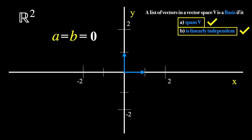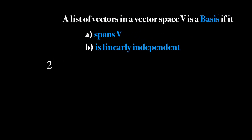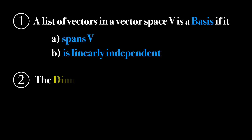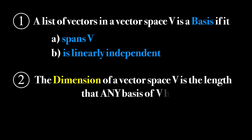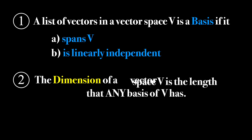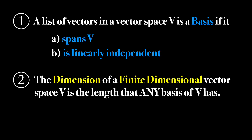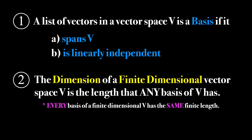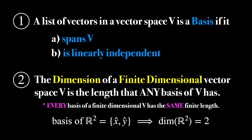Since the definition of a basis has been cleared up, it is now straightforward to understand the closely related concept of dimension. The dimension of a vector space is the length that any basis will have. To be a bit more precise, the dimension of a finite dimensional vector space is the length of any of its bases. This is a well-defined definition since for any finite dimensional vector space, every basis will have the same finite length. So in the previous example, since the basis for R2 has only two vectors, the dimension of it is just two, as we would expect.